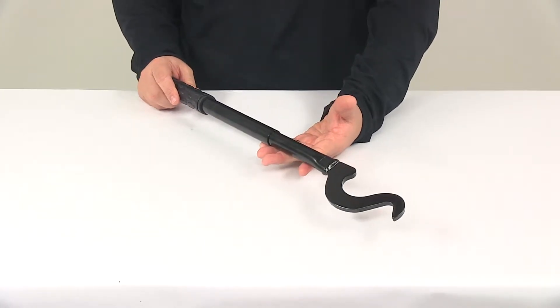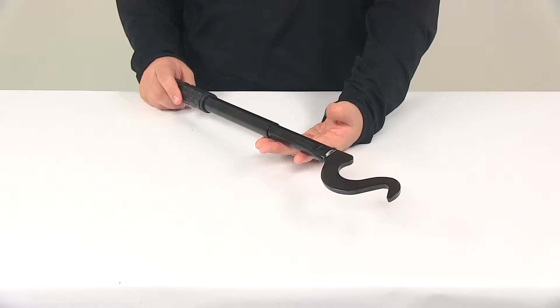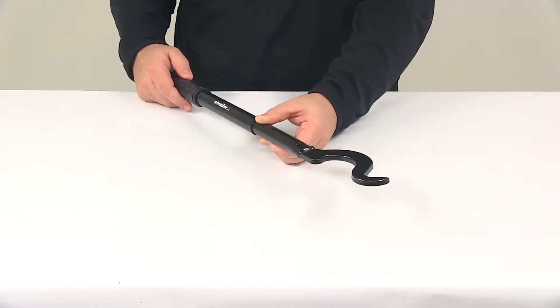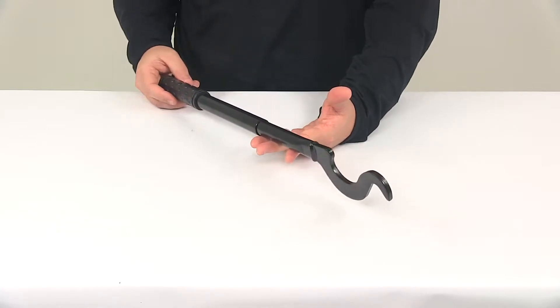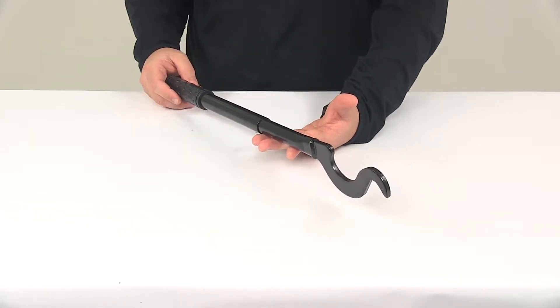It simply replaces the snap-up handle assembly that was included with your equalizer weight distribution system, and it eases hookup by providing improved leverage when lifting the spring bars into place on the sway control brackets.